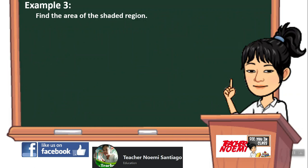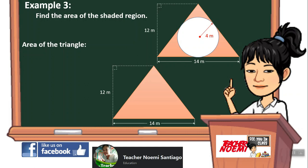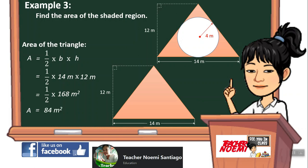Example number 3: Find the area of the shaded region. We have a triangle and a circle. Let us find first the area of the triangle. The formula for the triangle is A equals one-half times base times height. One-half times the base of 14 meters times the height of 12 meters equals one-half times 168 square meters. The area equals 84 square meters.